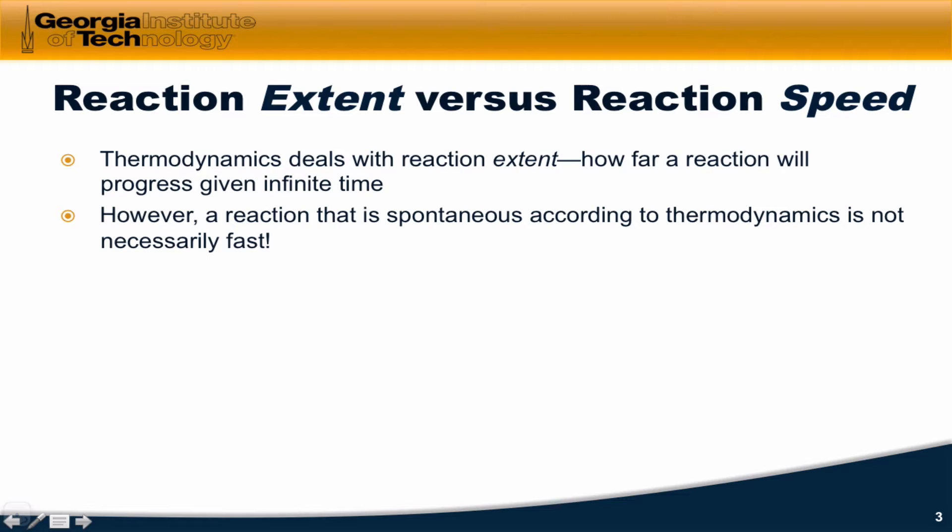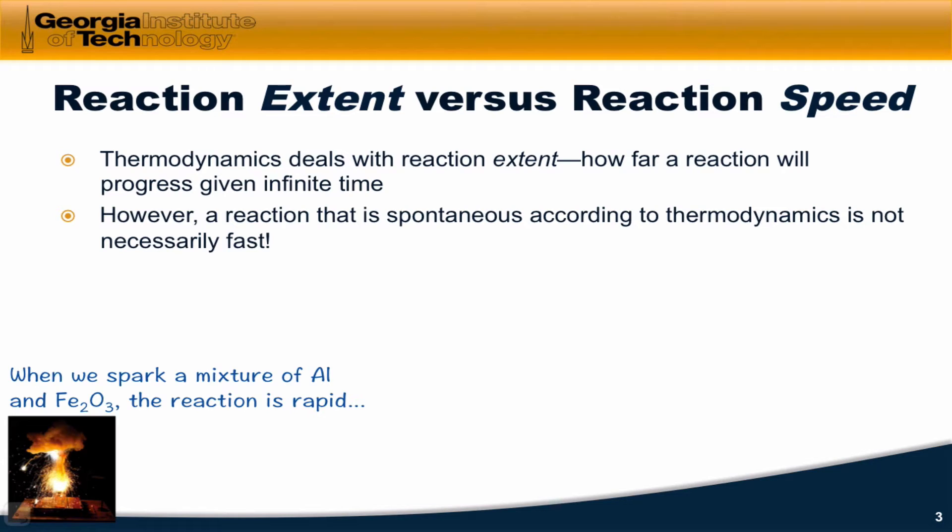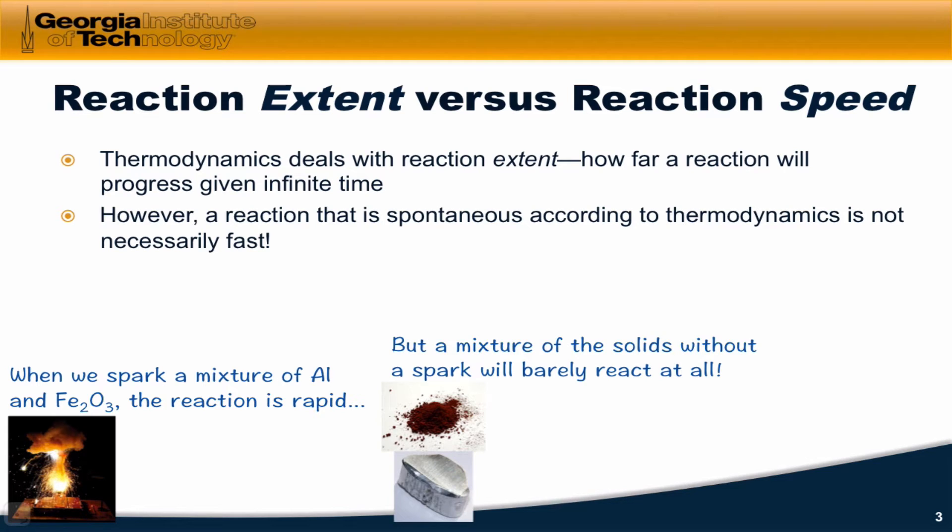However, a reaction that is favored on the product side according to thermodynamics, one that is spontaneous in the forward direction, is not necessarily rapid. For example, when we take aluminum metal and Fe2O3 and spark the mixture, the reaction is rapid. This is the thermite reaction. But we could take the same two substances, aluminum metal and Fe2O3, and simply sit them on top of one another, and they would sit there and do nothing. So even though that reaction is spontaneous, there's a difference in the speed of the two reactions. The thermodynamics of the two is the same, even though the reaction speeds and the kinetics are different.